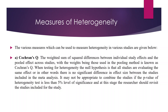The first measure of heterogeneity is Cochrane Q. It is a weighted sum of squared differences between individual study effects and the pooled effect across studies, with weights being those used in the pooling method. The null hypothesis of the Cochrane Q is that there is no significant difference in the effect size between studies included in the meta-analysis. If your p-value is less than 0.05, we reject the null hypothesis, which means the variation among studies is large. If the p-value is more than 0.05, we fail to reject the null hypothesis, meaning variations are not so large and you can report the aggregate studies easily.